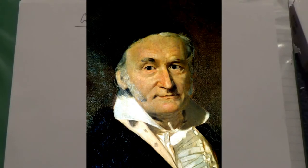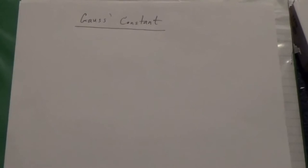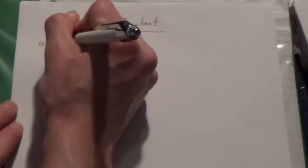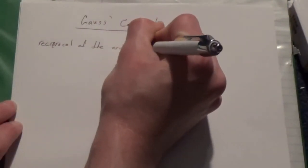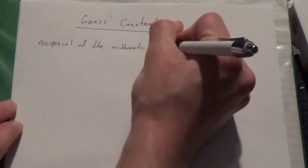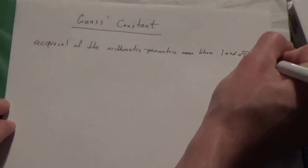Now if you don't already know, the German mathematician Karl Friedrich Gauss is actually my personal favorite mathematician. And there's something quite interesting that is Gauss's Constant, defined to be the reciprocal of the arithmetic geometric mean between 1 and the square root of 2.